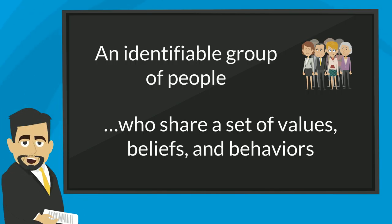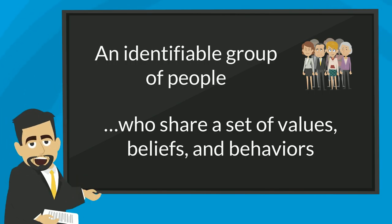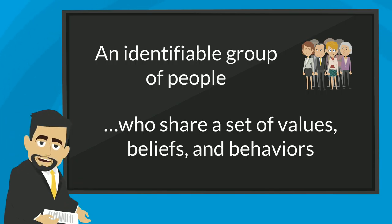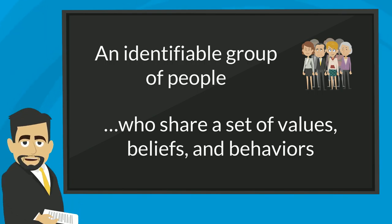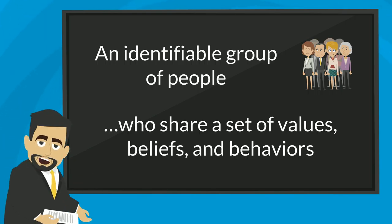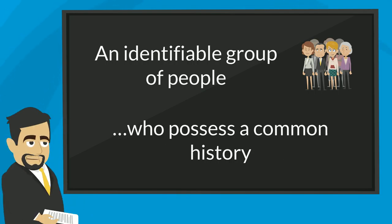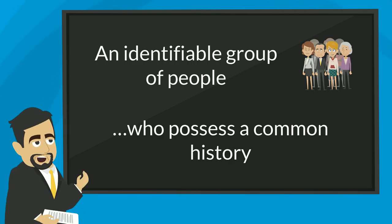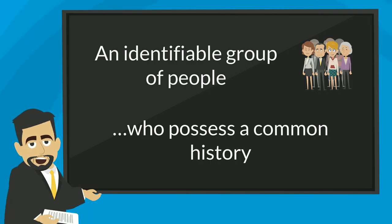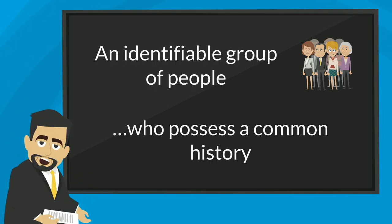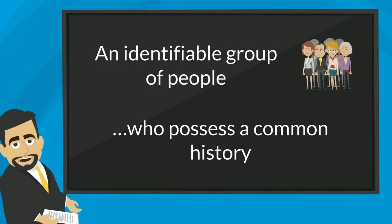This fits perfectly with the 3P model of culture that we looked at in Unit 1. Cultures are defined by their perspectives, practices, and products. Who possess a common history — having a common history is another requirement for an identifiable cultural group.